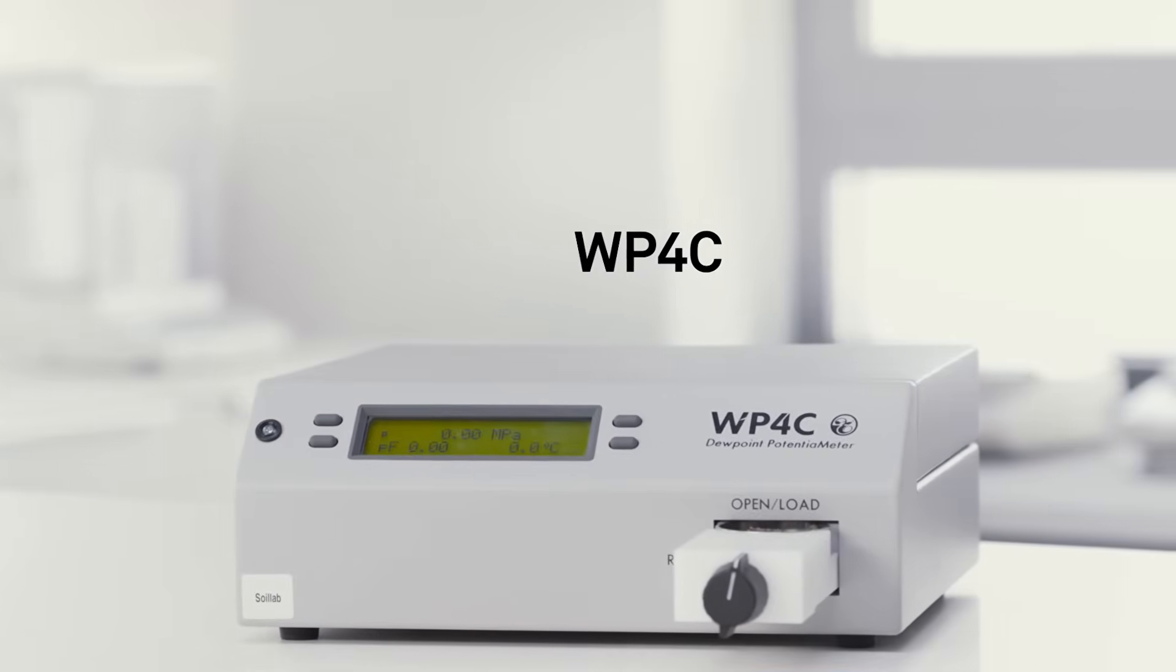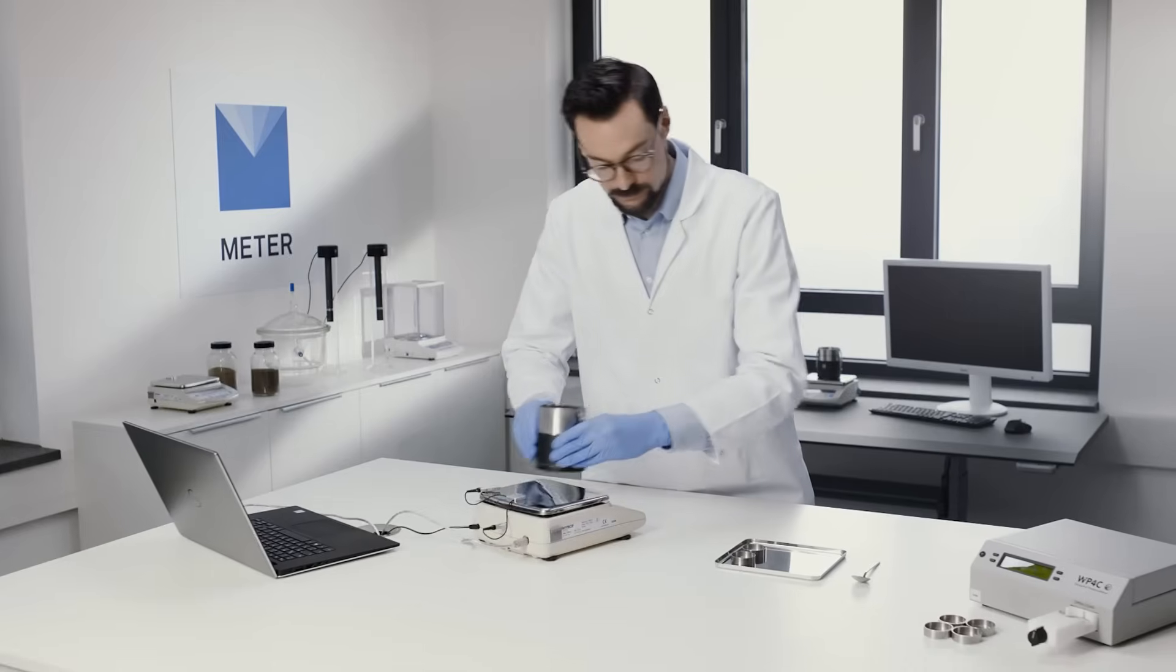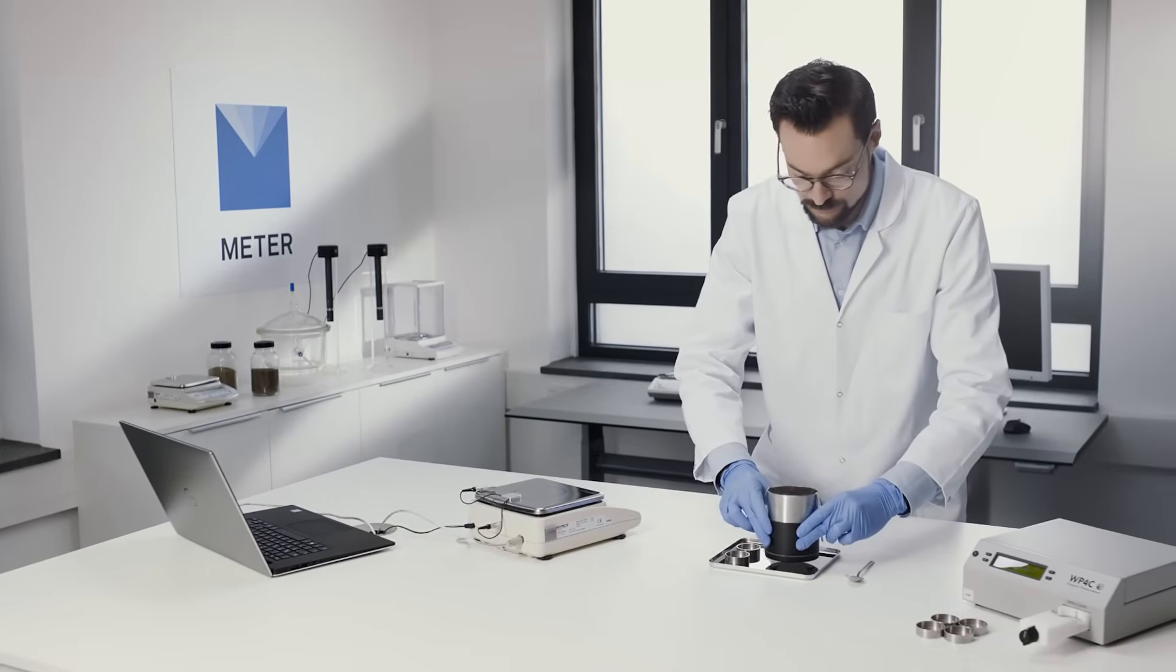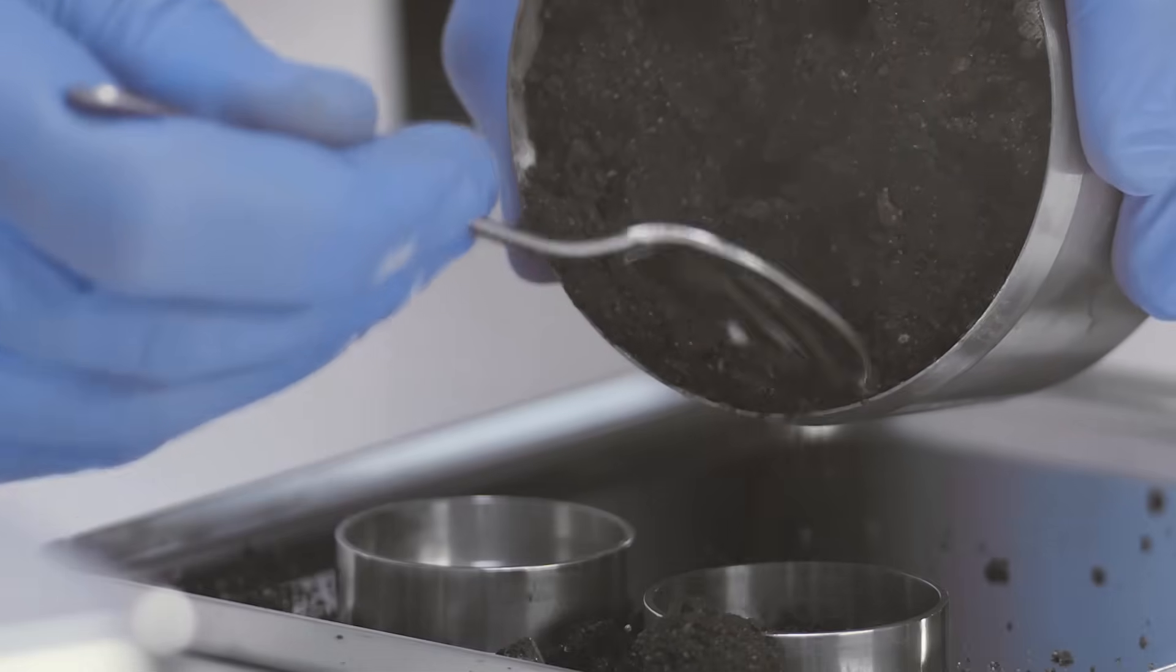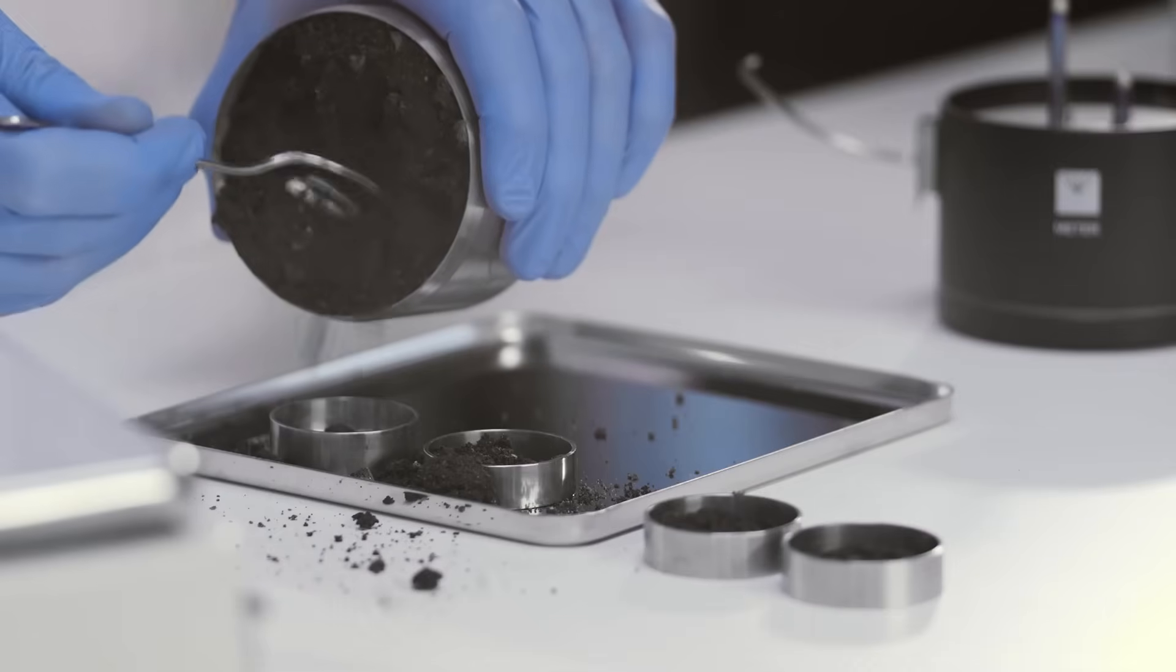Set up the WP4C. Remove the sample from the high prop and take two samples each from the top, middle, and bottom of the soil core.